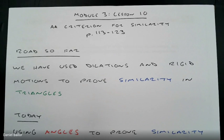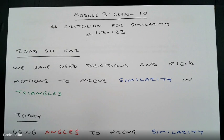Hello class. Welcome to the next lesson in 8th grade Eureka Math, Module 3. We're on Lesson 10, something called the AA Criterion for Similarity. We'll need pages 113 to 123 in your math workbooks.